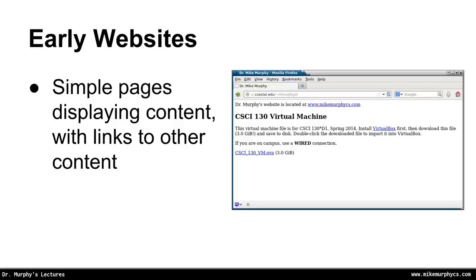In the early days of the internet, websites looked something like this. There were very simple pages that displayed content and had links to other content. Everything was extremely static in nature, and one simply navigated between static pages by clicking on links. This was a huge improvement over what came before — simply repositories of files you'd have to download and read all at once — but by today's standards, this looks pretty spartan.